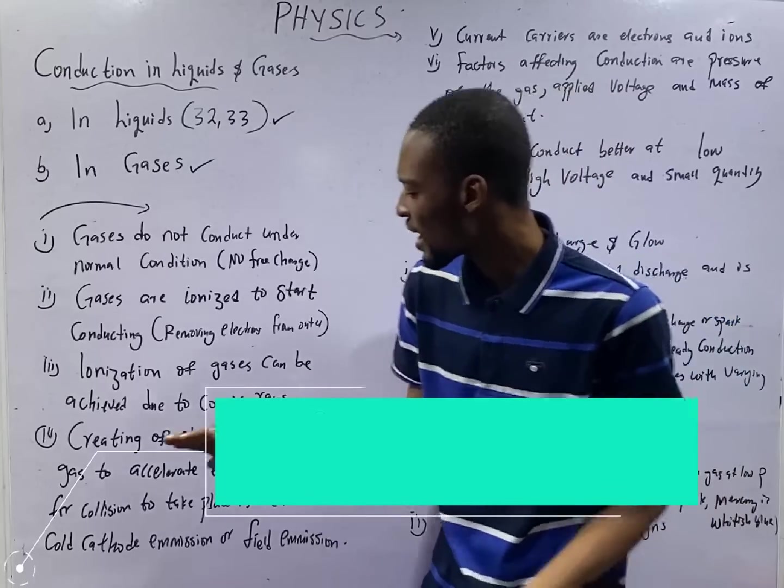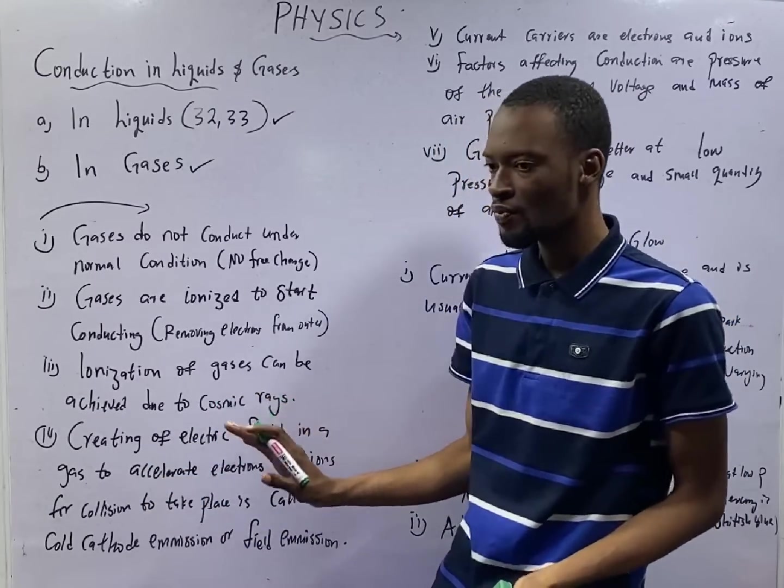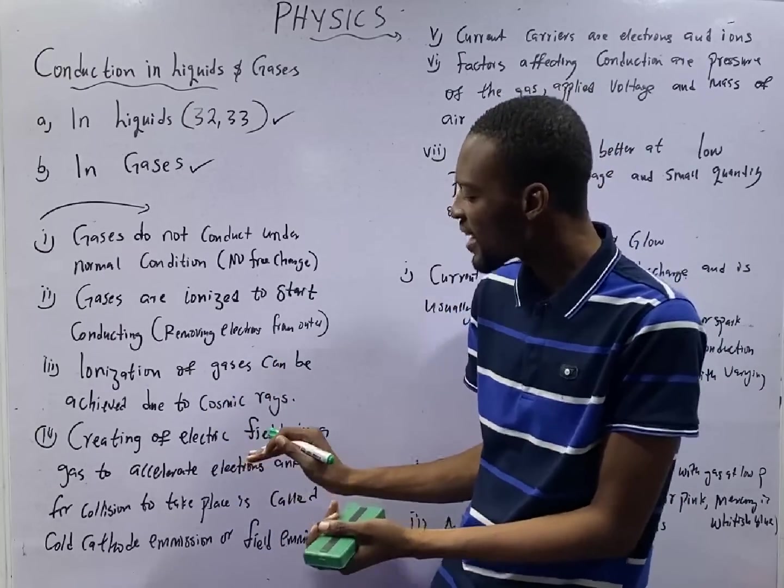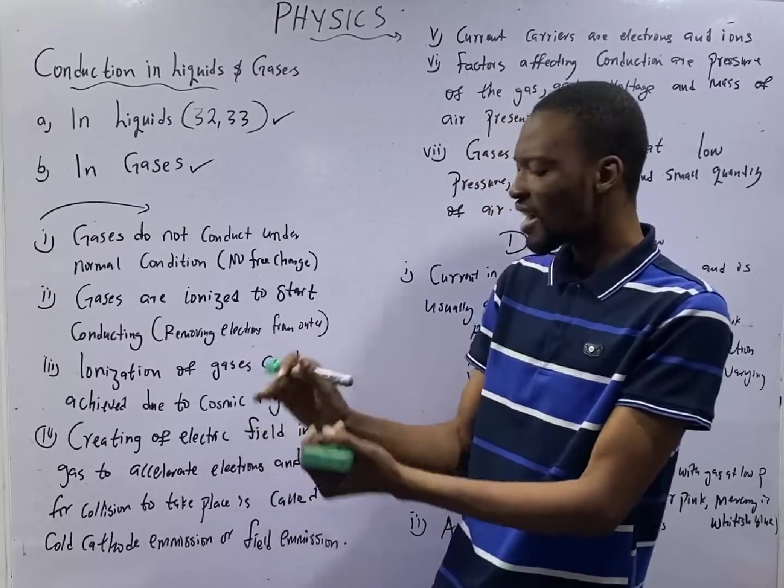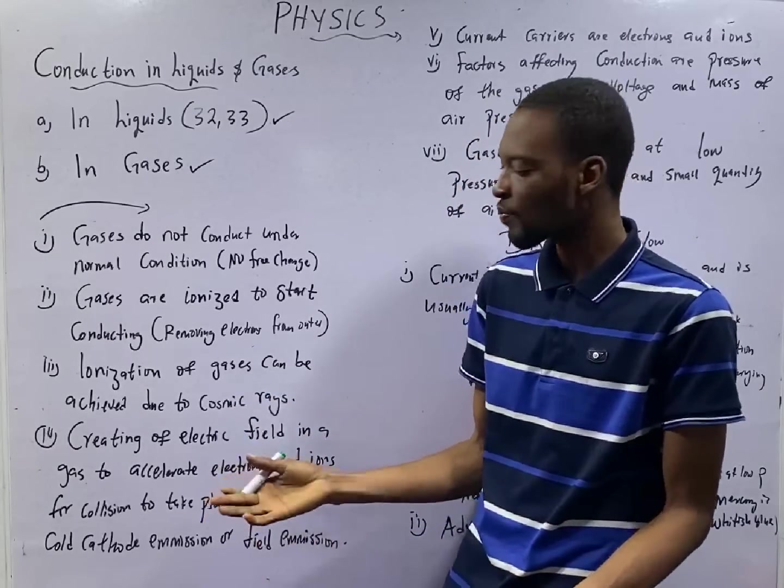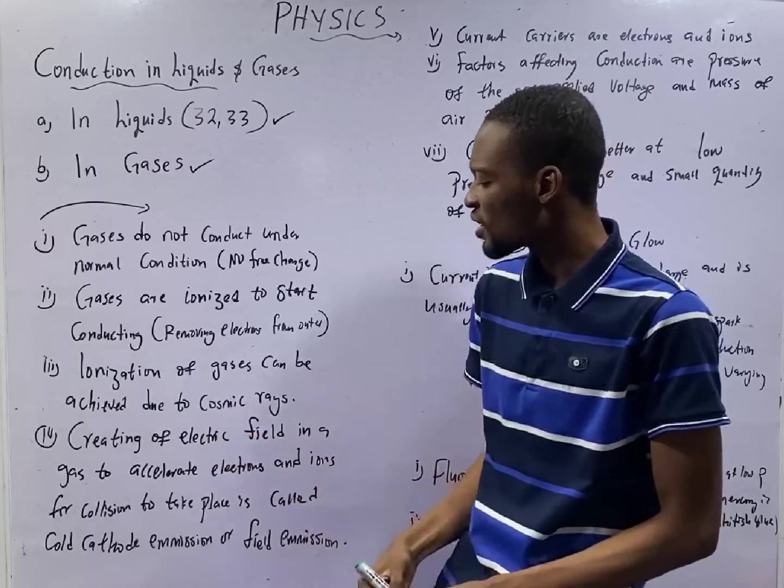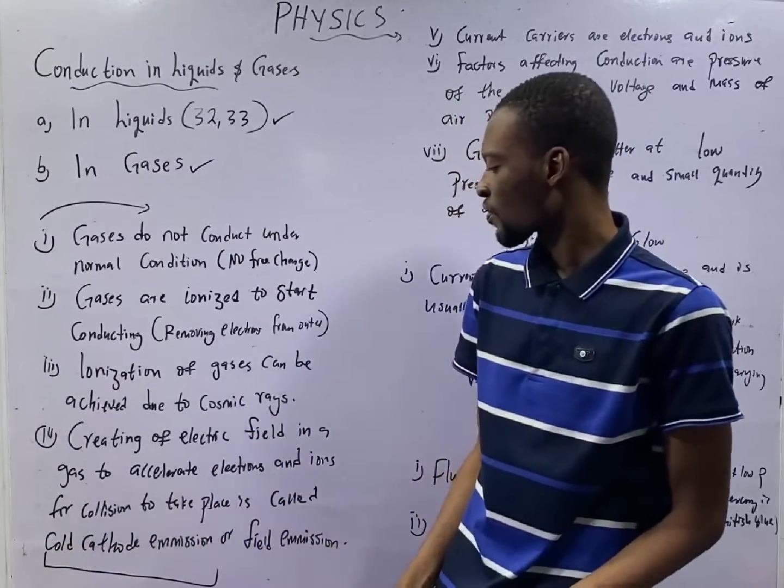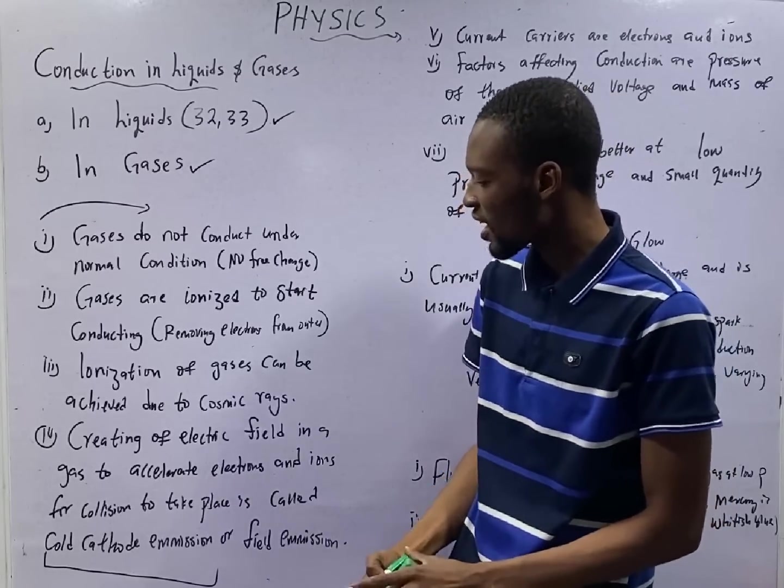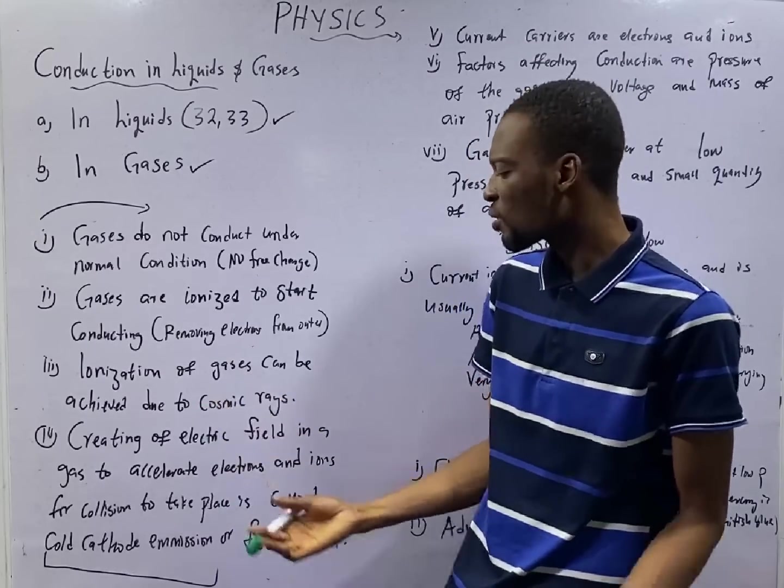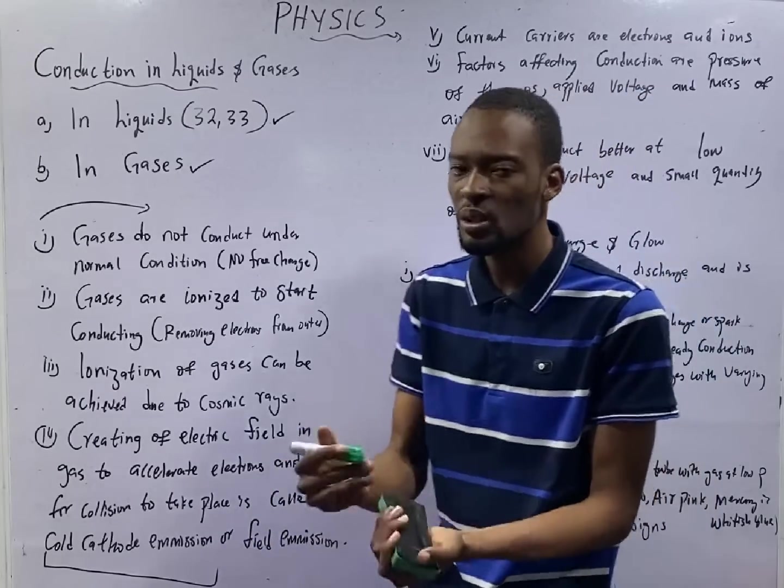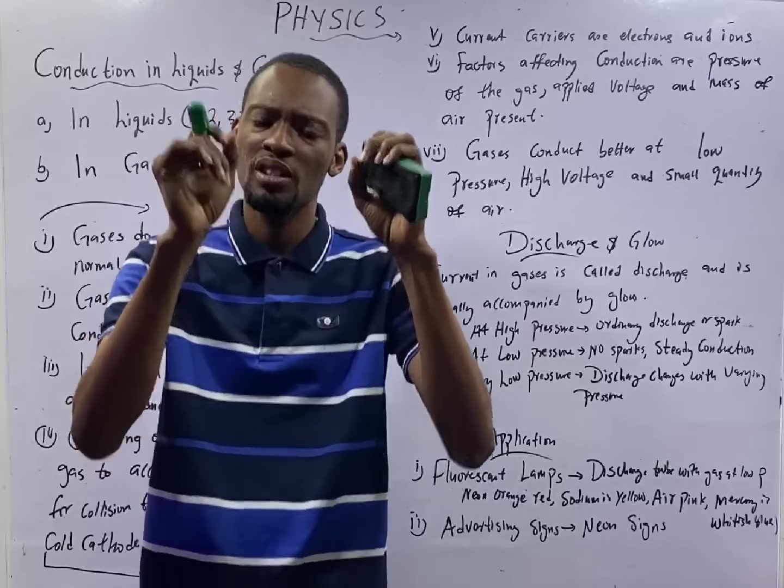Number three: Ionization of gases can be achieved due to cosmic rays. The presence of these cosmic rays, electrons, protons, radiation, will create electric field in gas. And this electric field will accelerate the ions so that collisions can take place. The process of doing all this is referred to as cold cathode emission. When you try to create electric field in the gas to accelerate the ions and electrons for collision, so when there is collision and it is effective, there will be conduction. You call this process cold cathode emission or field emission.